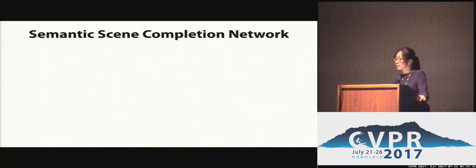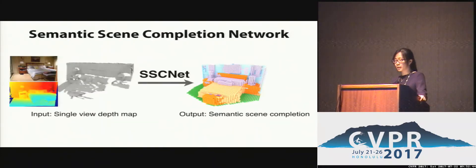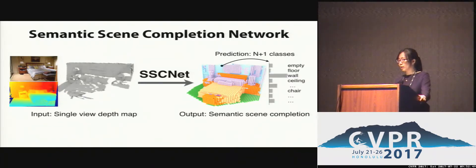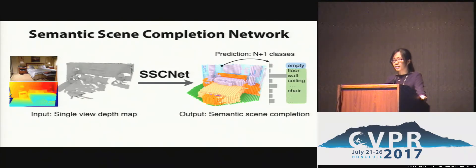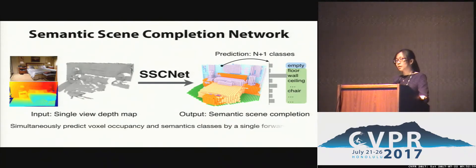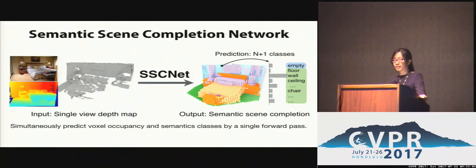Our paper is based on two simple ideas: object occupancy and identities are tightly intertwined, and it is very important to capture and understand the 3D context with a big receptive field. Based on these two ideas, we solve this task by introducing a semantic scene completion network, which is a 3D convolutional neural network that maps each voxel in view to one of n+1 semantic labels — either empty or occupied by one of n object classes — simultaneously predicting voxel occupancy and semantic classes in a single forward pass.